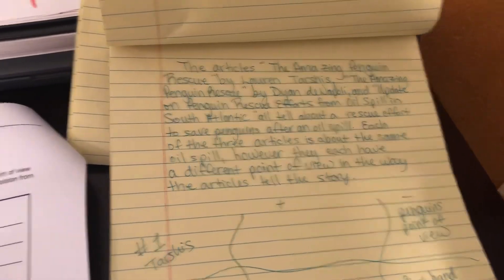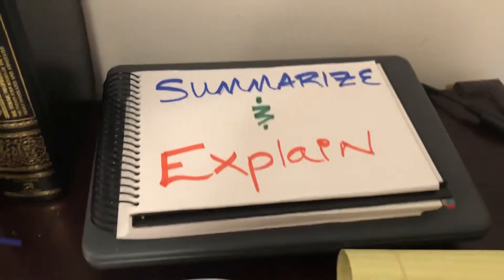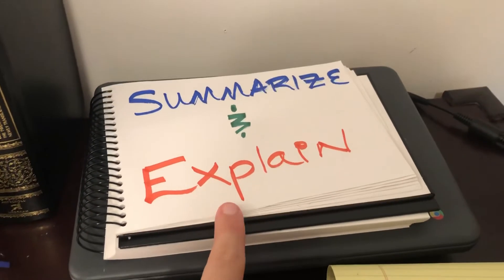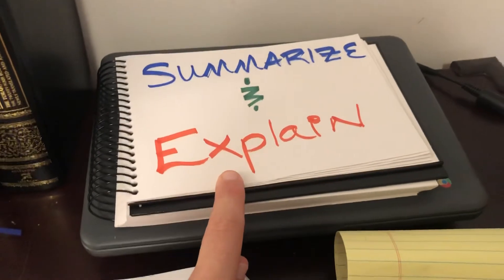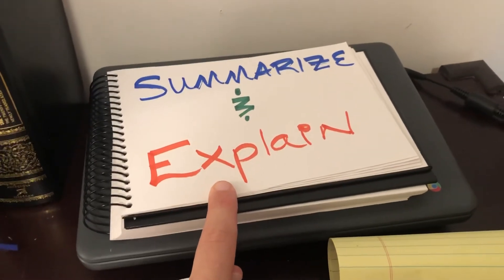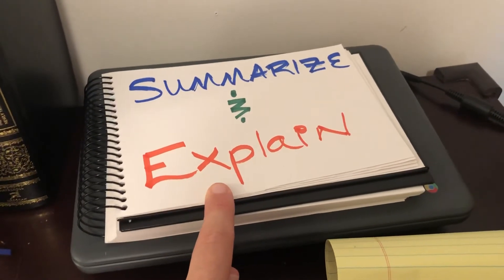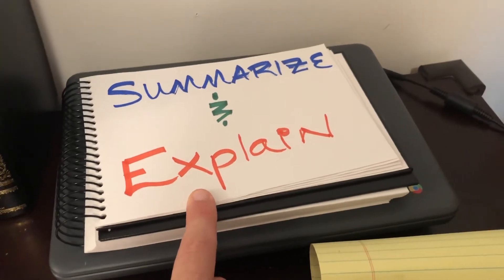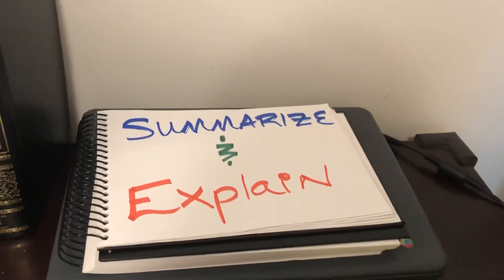Remember what I have to do: I have to summarize and explain. They want our thinking, not our feelings — our thinking. They want to see that we understand what we read, and we're going to explain it back to the readers of our essay.